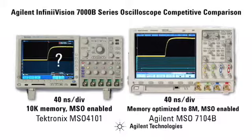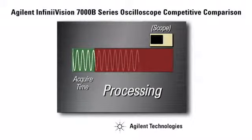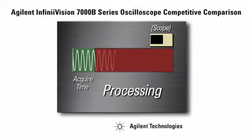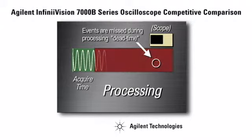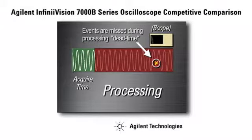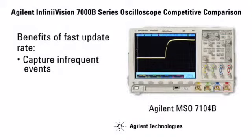How can the Agilent scope consistently capture the glitch while the Tektronix doesn't? In real-time mode, digital oscilloscopes repetitively acquire data and then process the data for display. While the scope is processing, its acquisition system is blind to your signal activity. Oscilloscopes with fast update rates minimize processing time and will find infrequent events that scopes with slower update rates will miss.